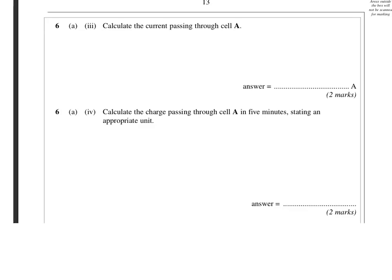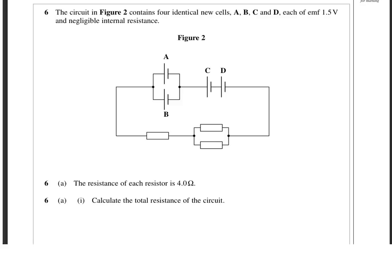Right, the next part of the question asks us to calculate the current passing through cell A. So let's have a look at the diagram again. Well, here's cell A. It's part of that parallel branch. Now, all things being equal in a parallel branch of a circuit, they're exactly equal. The current is going to split identically. So whatever the total current in the circuit is, half of it is going to go through A, and half of it is going to go through B.